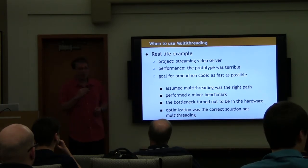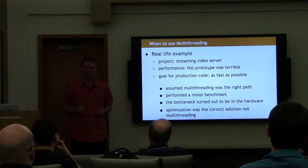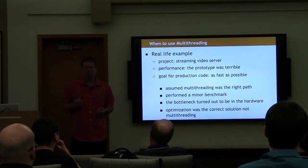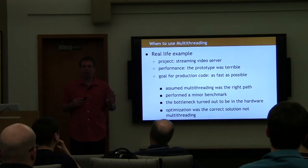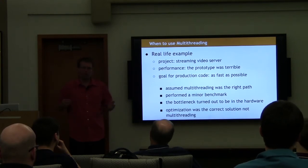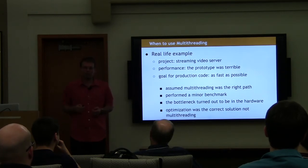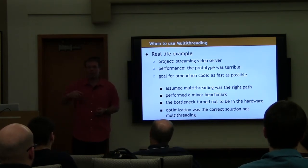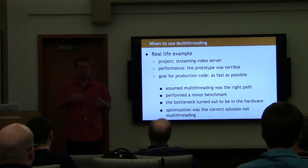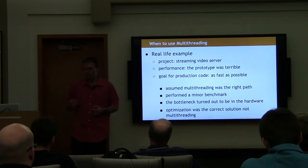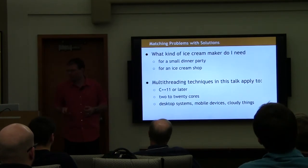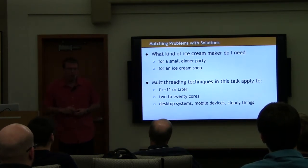As an aside, the single-threaded version of this system used about half a core to saturate the network card. At a certain point, I was asked to benchmark a multi-threaded version to see if we could improve performance. It turned out that the multi-threaded version took four cores to saturate the network system, because of the overhead involved in passing data around. The single-threaded version uses fewer resources and leaves more of the machine for the rest of your processing.